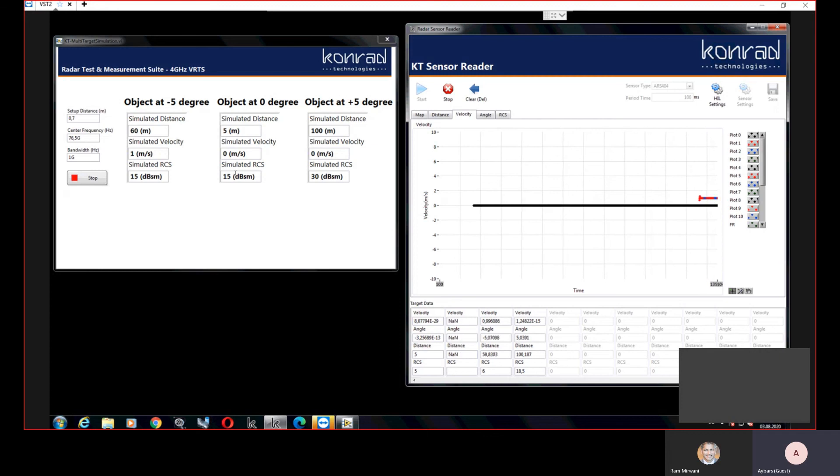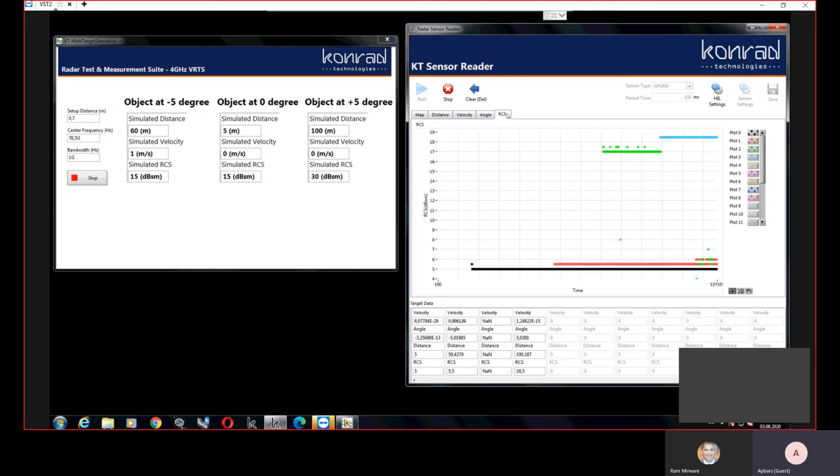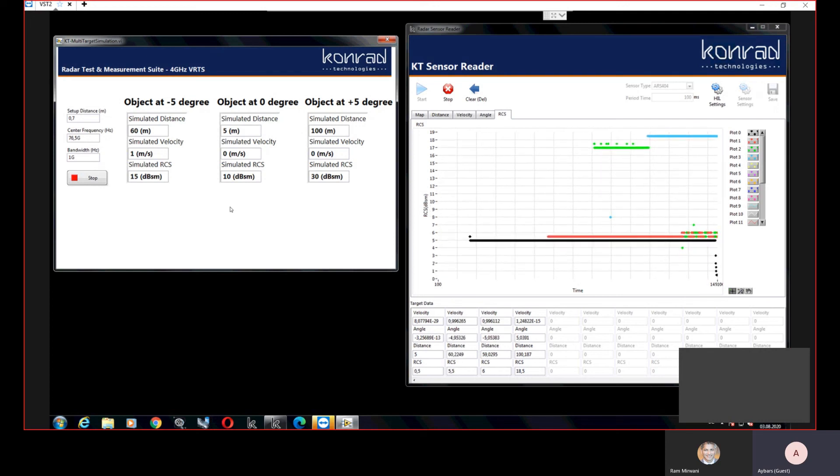We can also change the simulated RCS value. Now I will decrease my simulated RCS for the object at the zero degree and you can see the response of the detected object from the sensor.